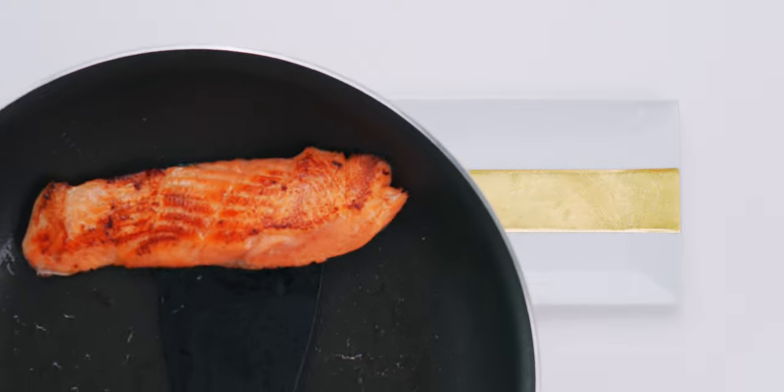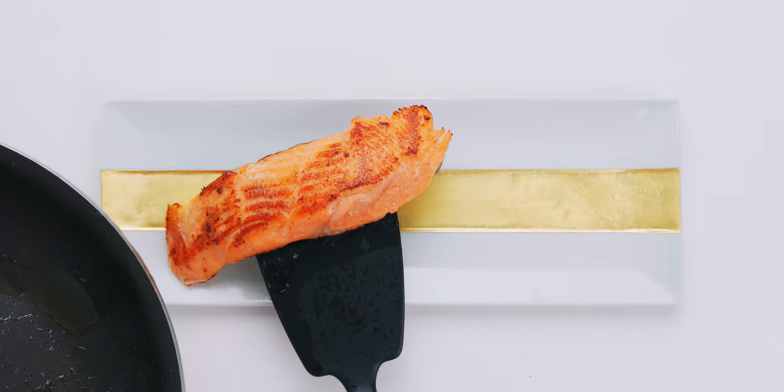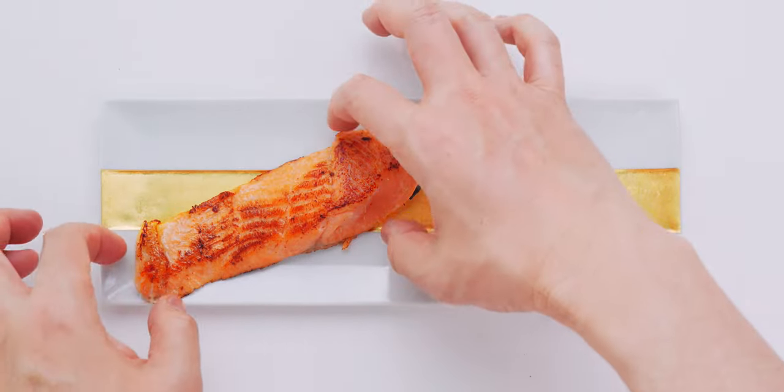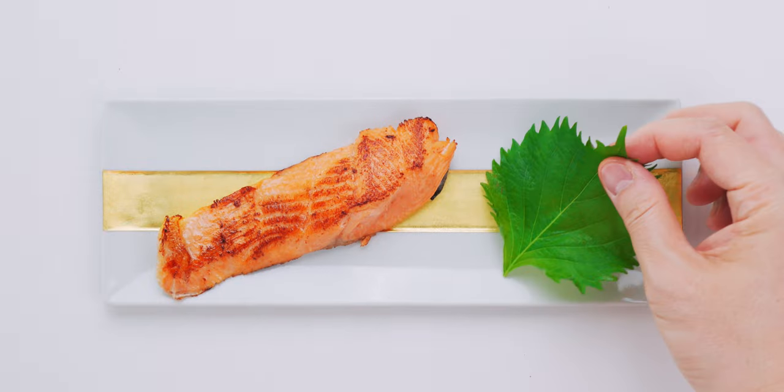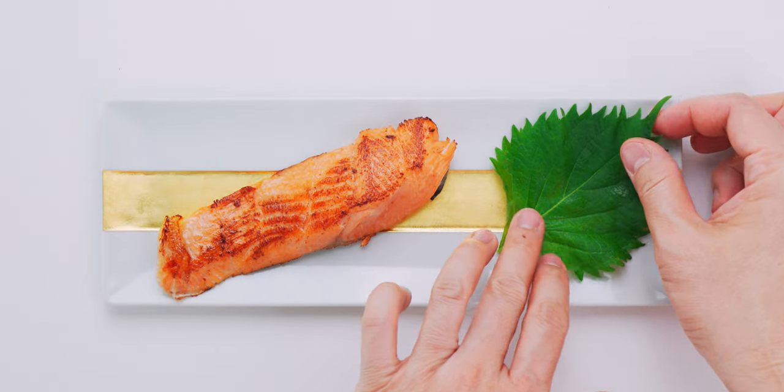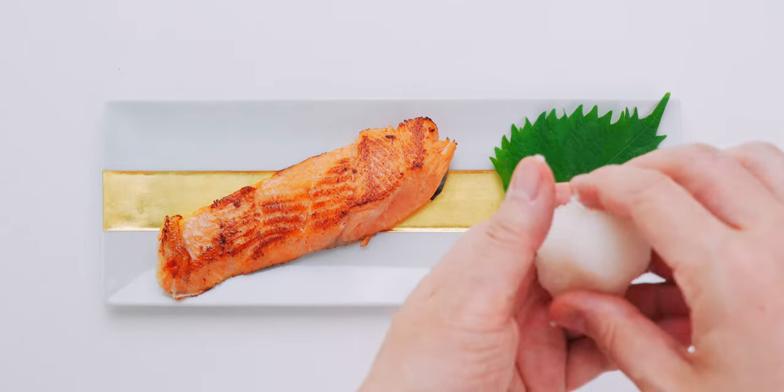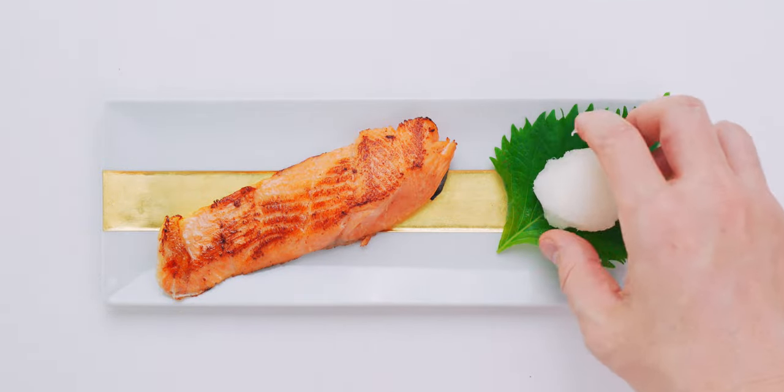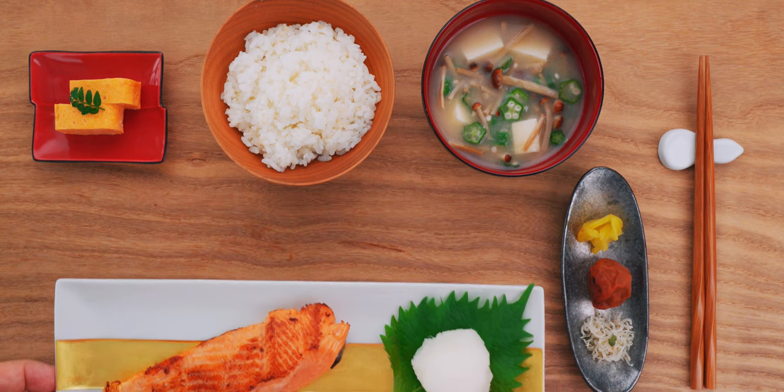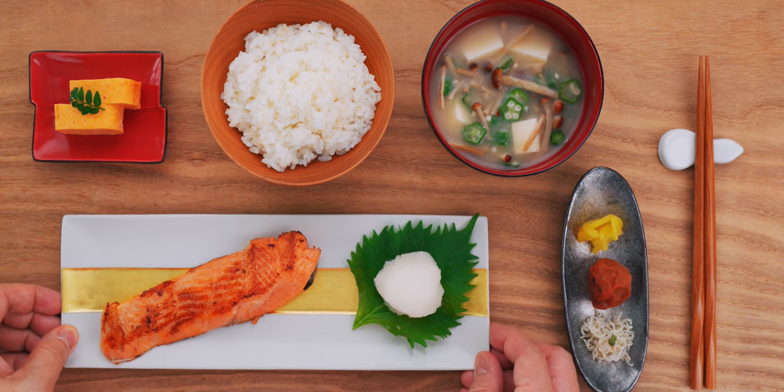Just place the salmon onto a plate, leaving enough room on one side to add the daikon. Then I'm going to put down a green shiso leaf for a splash of color, and I've got a handful of the drained daikon oroshi here, which I'm going to shape into a ball. Set it on the shiso, and our Japanese breakfast is done.